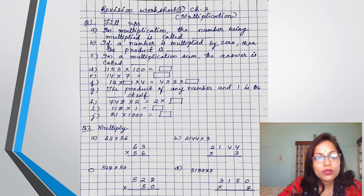So here the first question is fill-ups. In multiplication, the number being multiplied is called as. In multiplication terms, there are three parts: multiplier, multiplicand, and product. The number that is being multiplied is called multiplicand and it is multiplied by which number? That is called multiplier and the answer is called product.